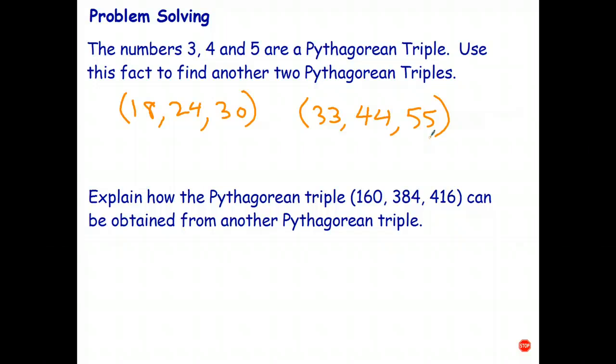Okay, the second little problem: explain how the Pythagorean triple 160, 384, and 416 can be obtained from another Pythagorean triple. So in this case, we could basically say, well, because each of those numbers is even, they've got 2 as a factor. So probably the easiest way to do this is to say, let's divide each of those by 2. And that means we must have another Pythagorean triple that uses smaller numbers than those.